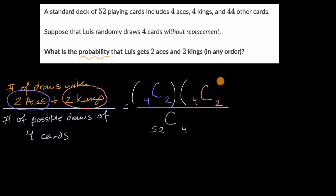And if you're wondering why you can just multiply it, think about it. For every scenario that you have these two aces, you have 4 choose 2 scenarios of which kings you're dealing with. So you would take the product of them.